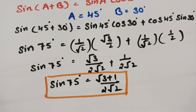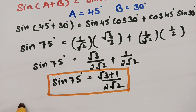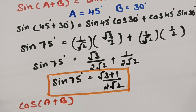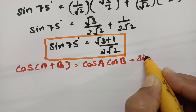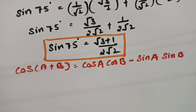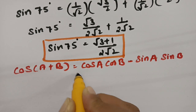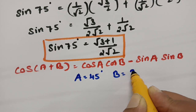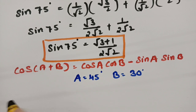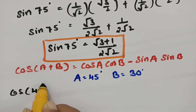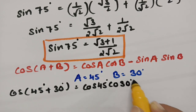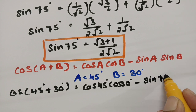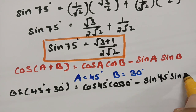For finding cos 75 degrees, we are using the compound angle formula cos of A plus B, which is equal to cos A into cos B minus sin A into sin B. Again, I am going to substitute A as 45 degrees and B as 30 degrees. If I substitute, this will be cos of 45 degrees plus 30 degrees equal to cos 45 degrees into cos 30 degrees minus sin 45 degrees into sin 30 degrees.